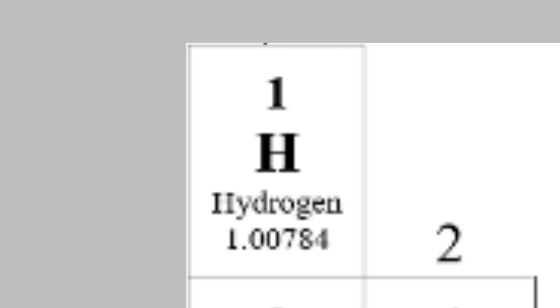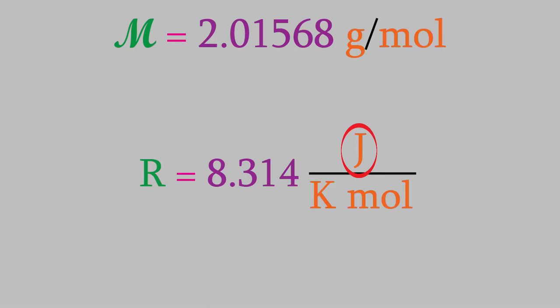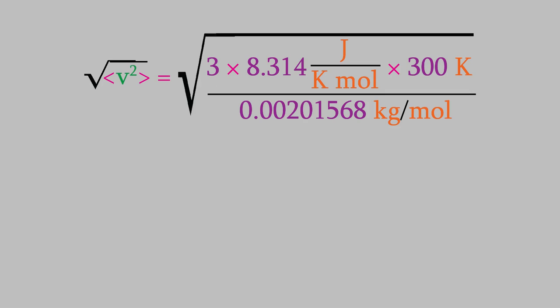So, using the periodic table, we find that H2 weighs 2.01568 grams per mole. But wait, let's think about our units here for a moment. The units for R include joules. You might remember that joules are equal to kilograms times meters squared over seconds squared. Notice that the unit contains kilograms, not grams. So, in order for our units to cancel out correctly, our mass should be in kilograms. So, for the molecular mass, we have 0.00201568 kilograms per mole. That makes the term under the square root equal to 3.7122 times 10 to the sixth.